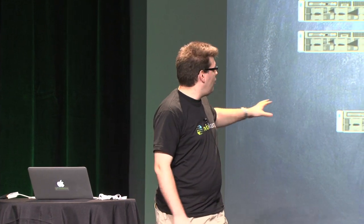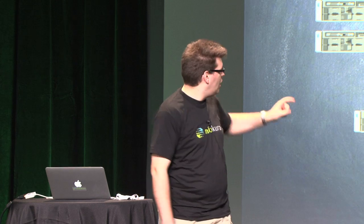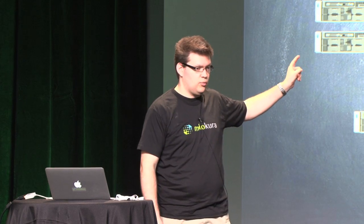How our system works is you have to have IP connectivity between all of your nodes. It doesn't matter if it's routed or layer two — as long as you can communicate stuff back and forth with IP, we create GRE tunnels between hosts to make everything work. We install a program called the MitoNet Agent on each one of your hypervisors and your border nodes.